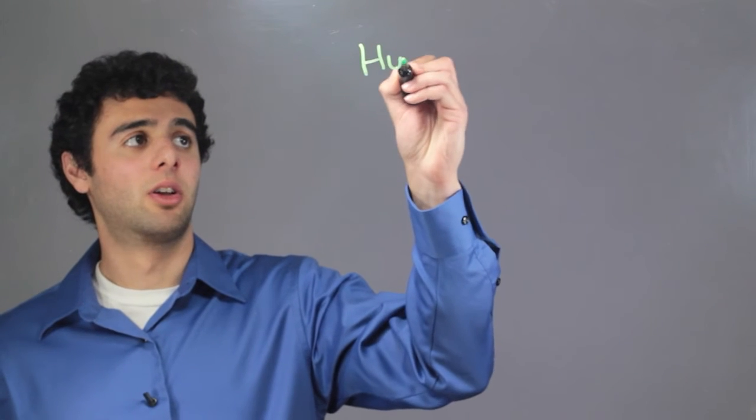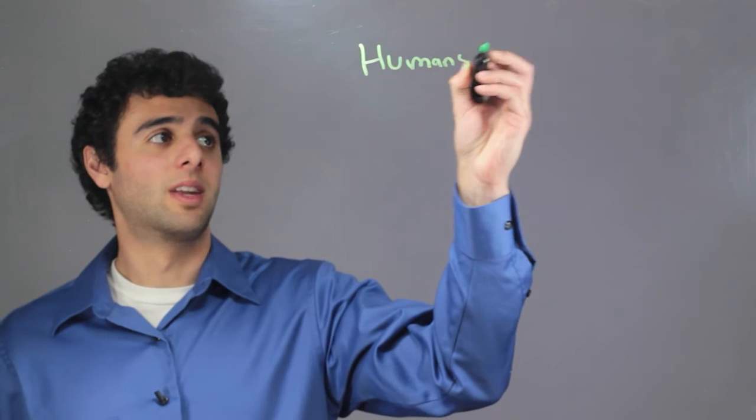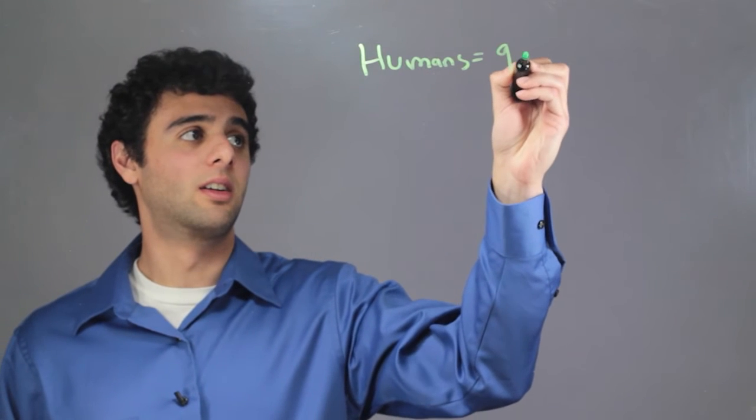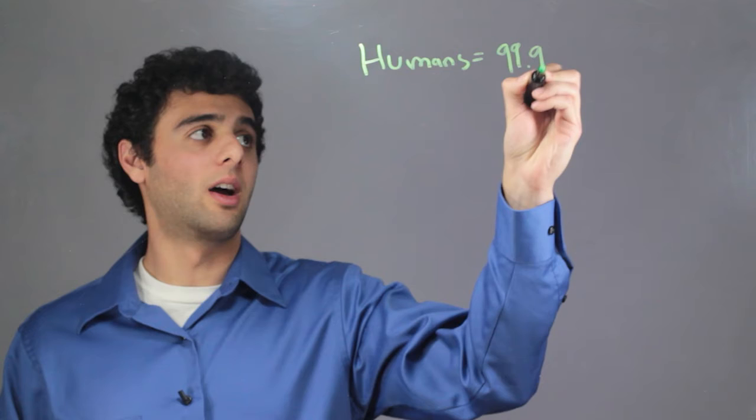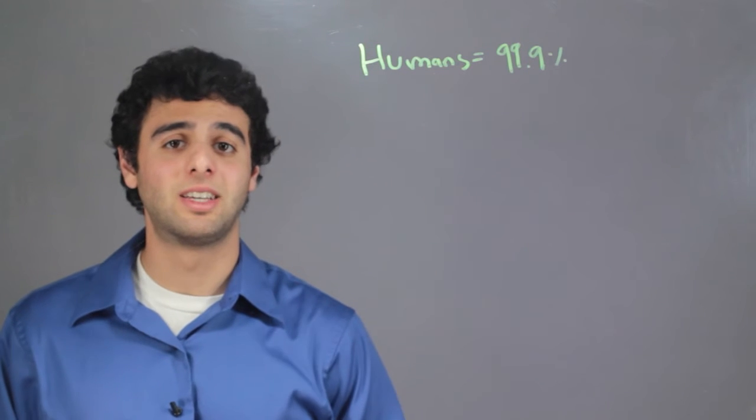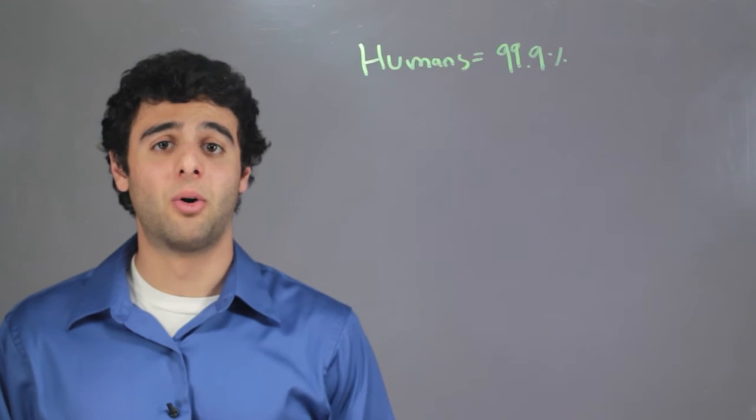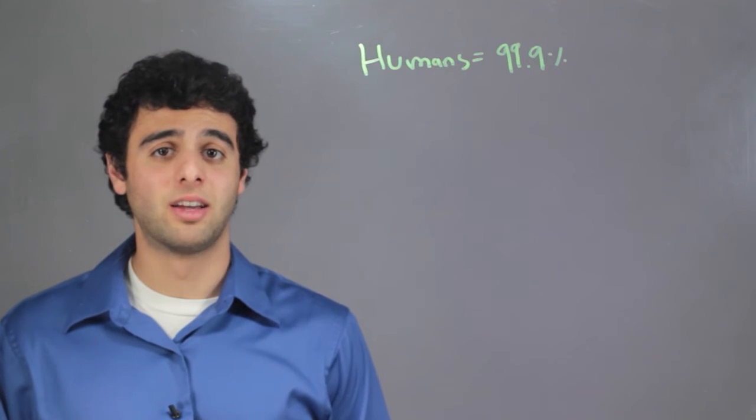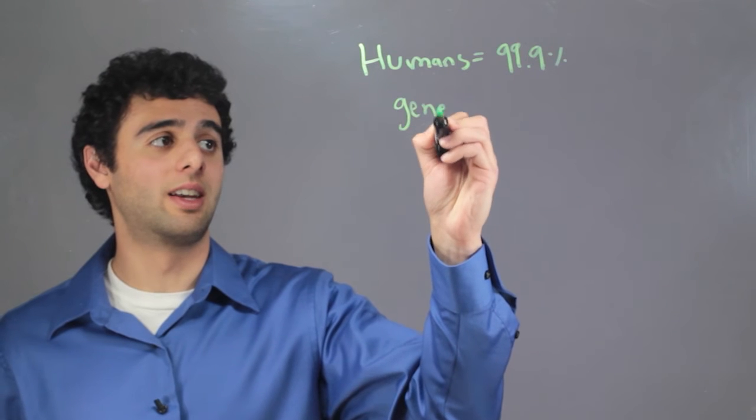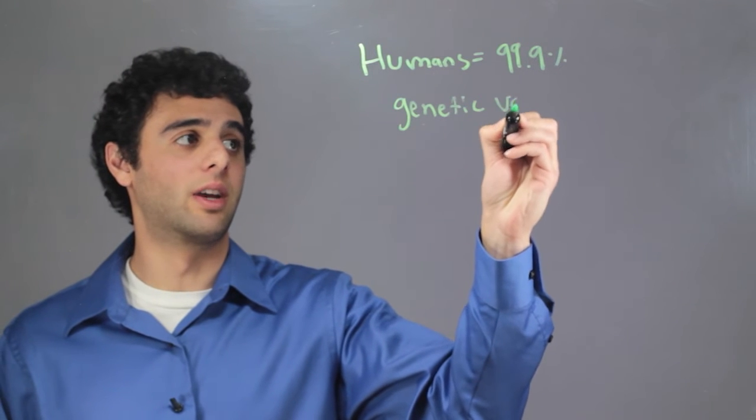First off, humans have 99.9% similar DNA to each other. This is very, very similar. However, differences arise in a process called genetic variation.